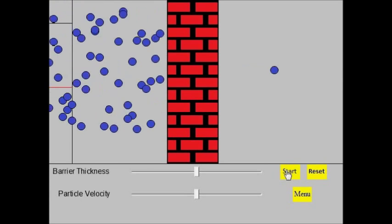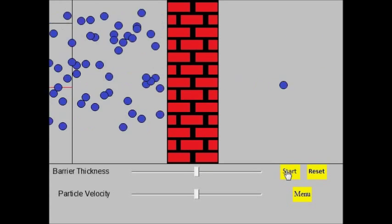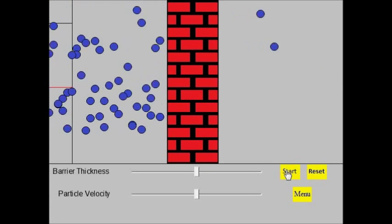For particles, tunneling means that while most of the particles still bounce off of the barrier, a few instantly get through.